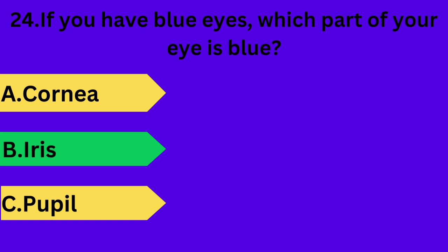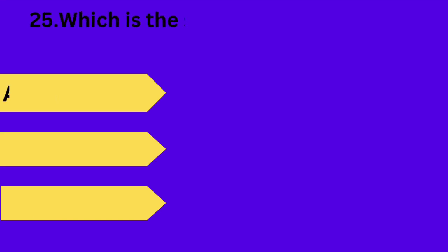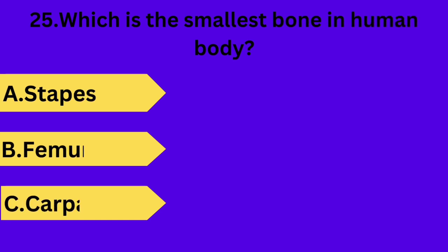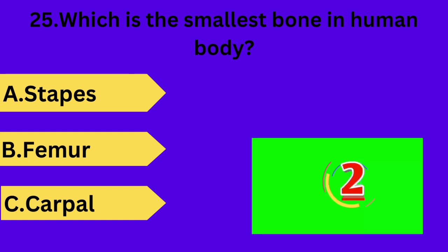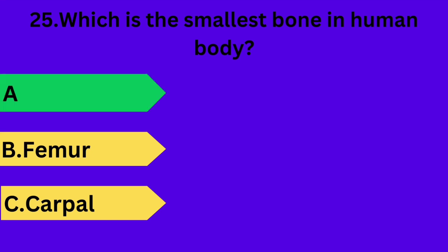And next question is: which is the smallest bone in the human body? Option A: stapes. Option B: femur. Option C: carpal. Your time starts now. Answer is option A: stapes.